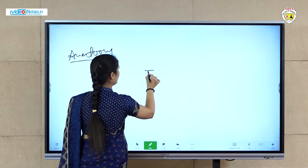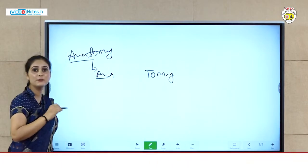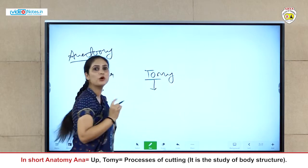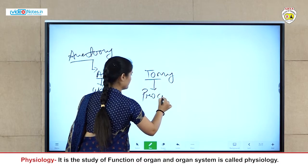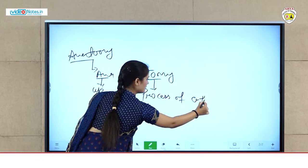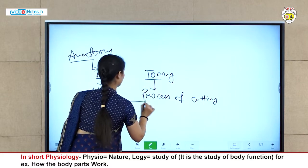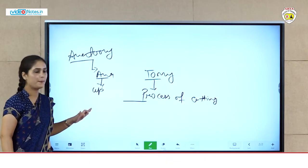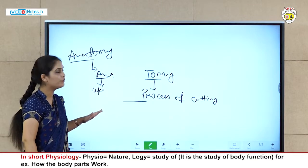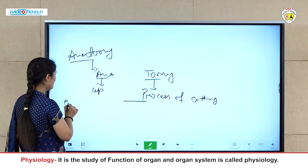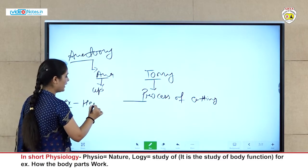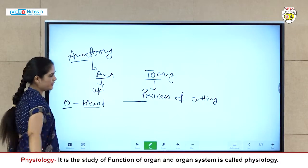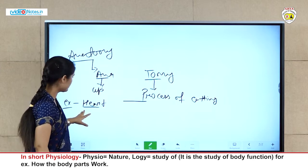The word anatomy is broken into two parts: 'anna' and 'tomy'. Anna means 'up' and tomy means 'process of cutting.' So basically, anatomy is the science of body structure and the relationship between organs and organ systems. For example, the heart — studying the heart comes under anatomy.